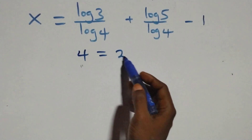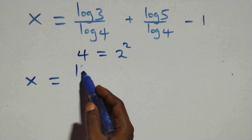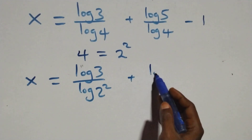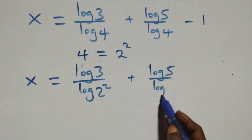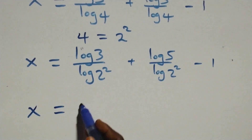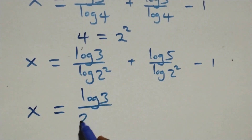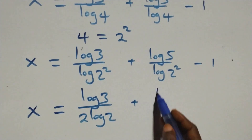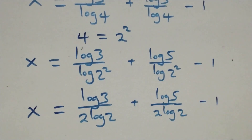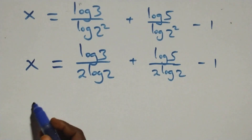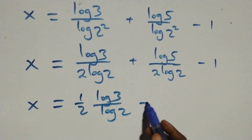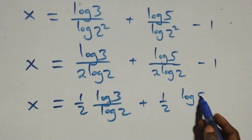We can rewrite 4 as 2 times 2, which is 2 squared. So x equals log 3 over log(2²) plus log 5 over log(2²) minus 1. Applying the power rule of logarithms, the 2 comes out in front: x equals log 3 over (2 log 2) plus log 5 over (2 log 2) minus 1. This can be written as x equals one-half times log 3 over log 2, plus one-half times log 5 over log 2, minus 1.